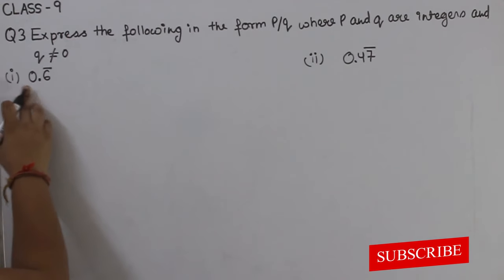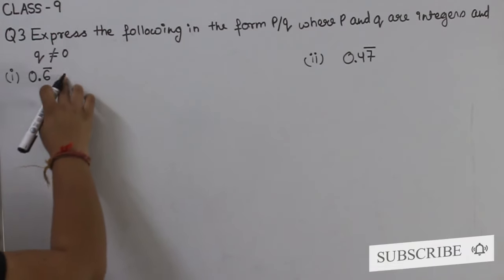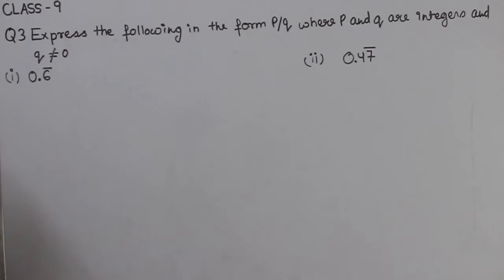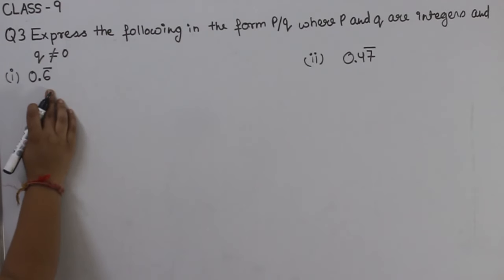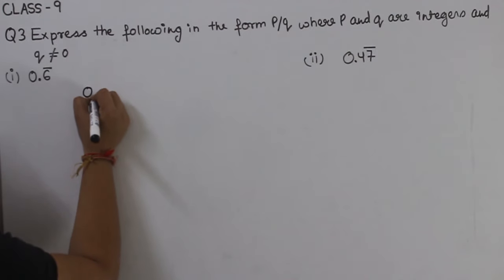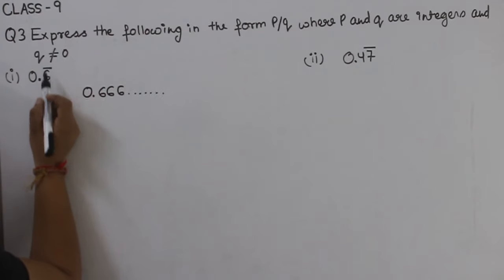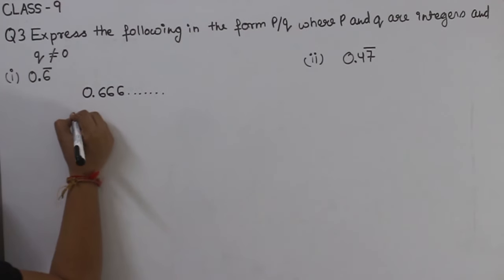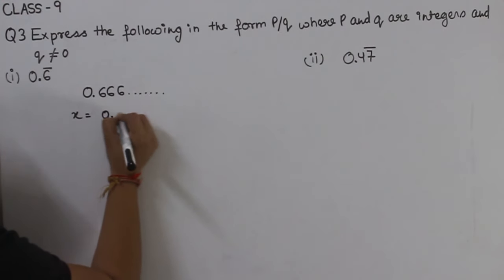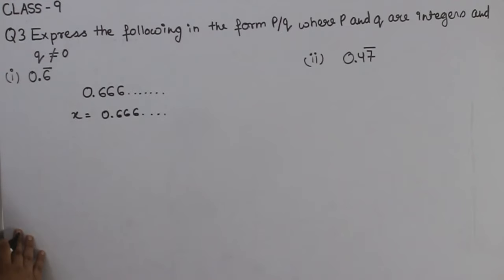The first part is 0.6 bar, so we have to express 0.6 bar in P by Q form. That means 0.666... bar means this number is getting repeated. To start, let x be equal to 0.666 and so on.